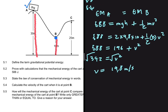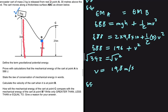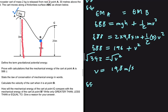Let's look at 5.5, which asks: how will the mechanical energy of the cart at point C compare with the mechanical energy of the cart at point B? Write only greater than, less than, or equal to, and give a reason. The answer is equal to. The reason: the law of conservation of mechanical energy — the total mechanical energy of an isolated system remains constant.